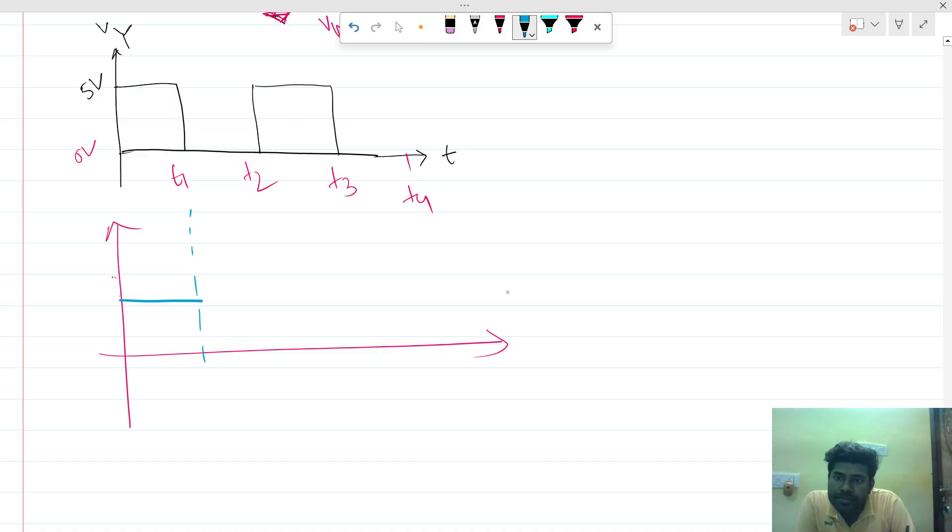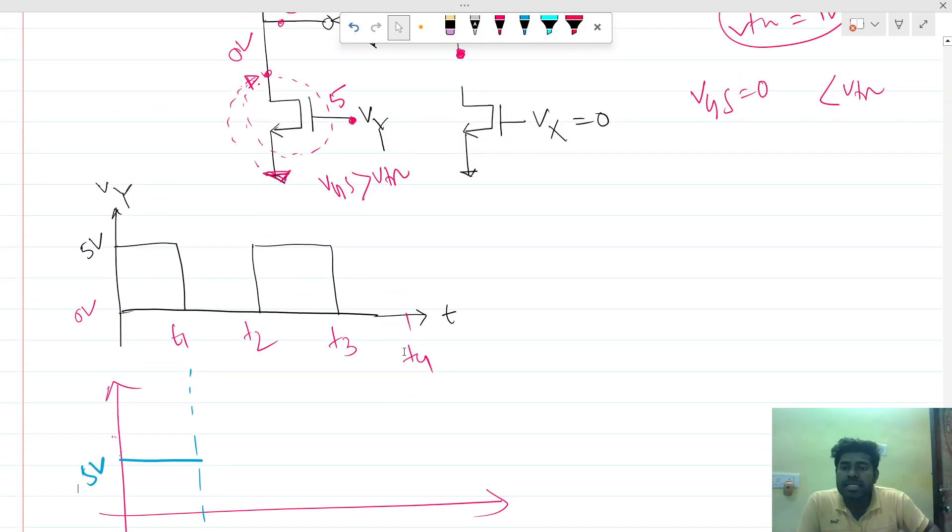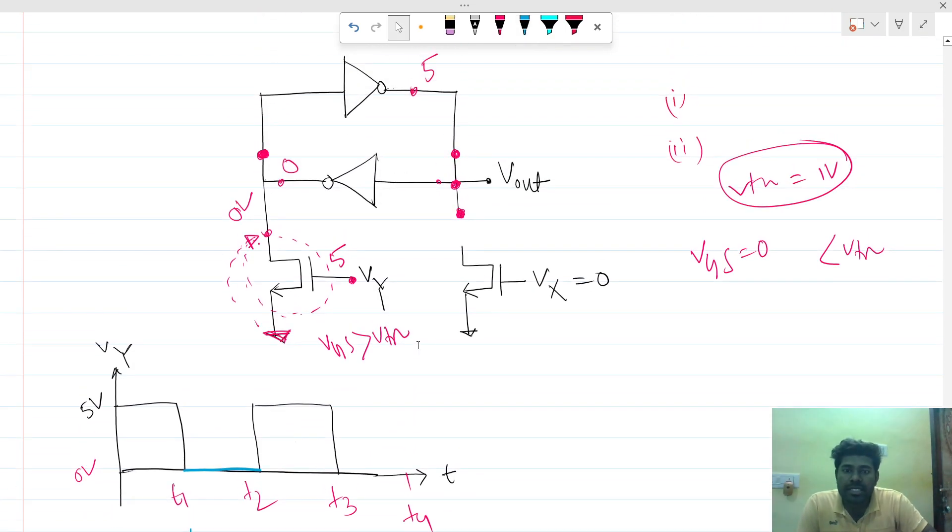Now what will happen at t1 to t2? VY is zero, so this will be zero volt and this is also zero volt, so this MOSFET is switched off. This switch is off.